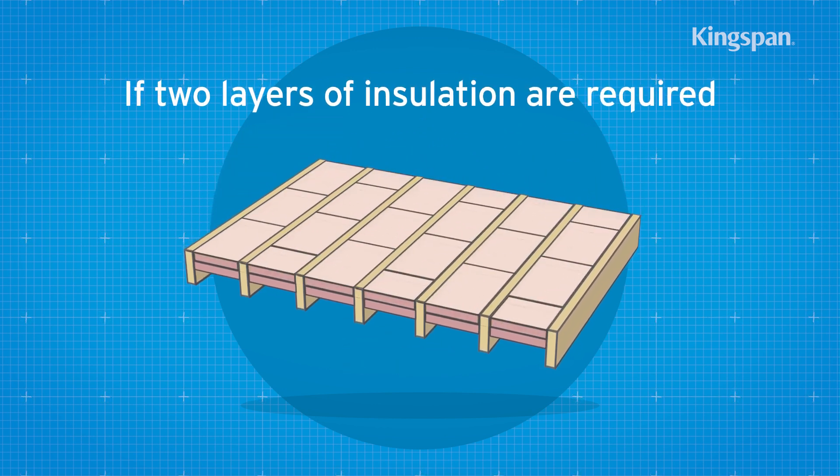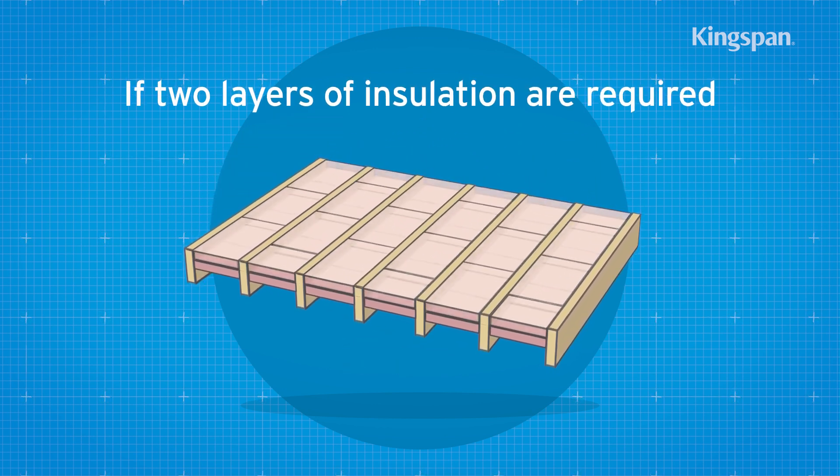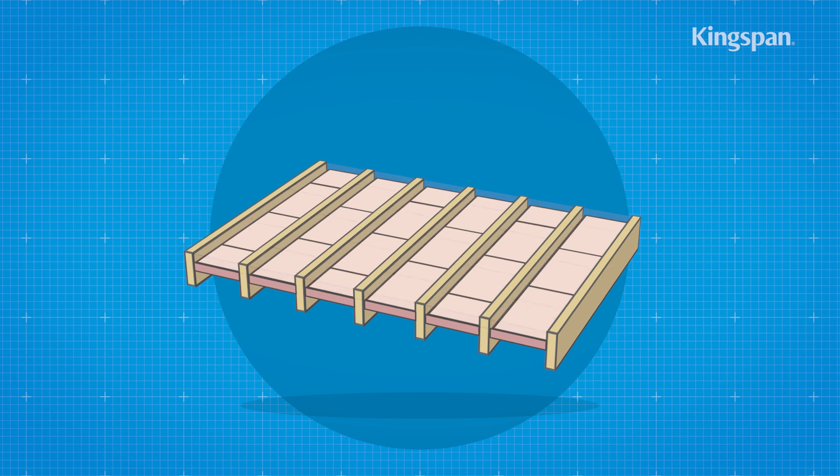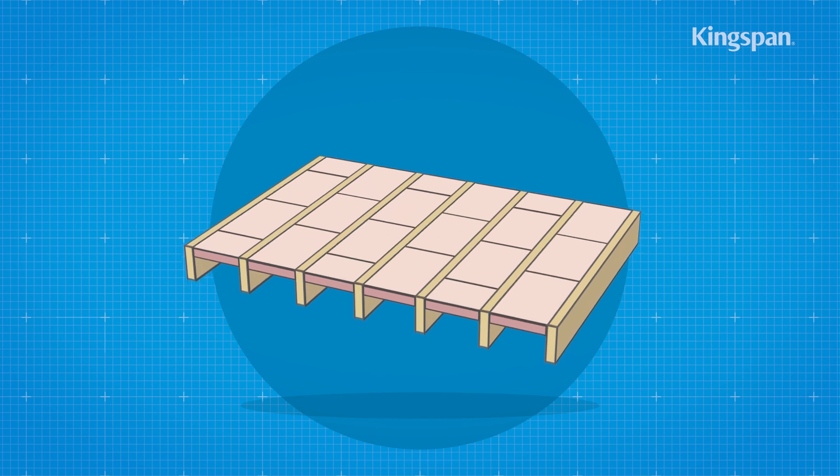If two layers of insulation are required, they should be horizontally offset so that the board joints on adjacent layers do not coincide with each other. All board joints should be tightly butted.